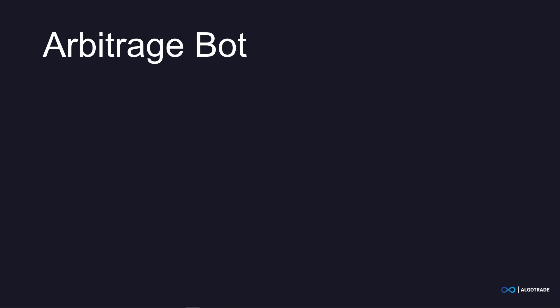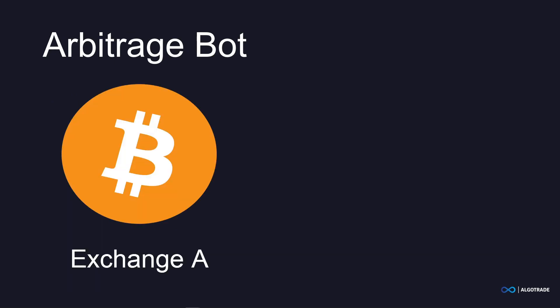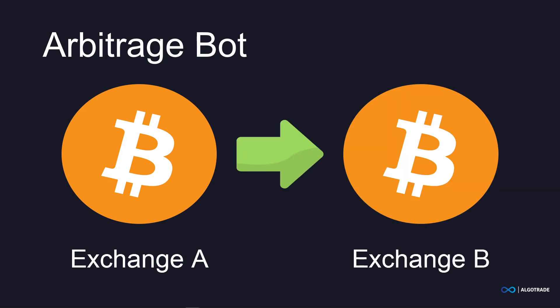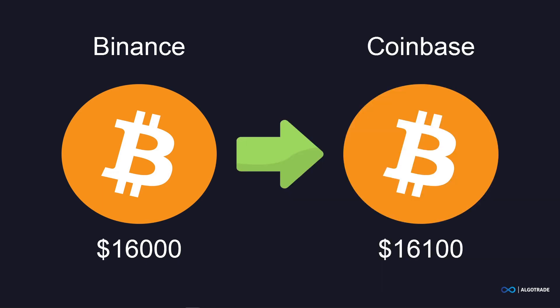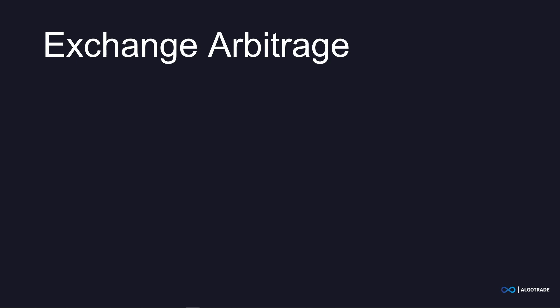One of the most misunderstood crypto trading bots are arbitrage bots. Arbitrage works by buying one cryptocurrency on exchange A and then selling it at a higher price on exchange B. For example, if the current price of Bitcoin against USDT on Binance is $16,000 and on Coinbase is $16,100, you could buy one Bitcoin for $16,000 on Binance and sell it for $16,100 on Coinbase to make $100 in profit. In theory this sounds very simple, but this type of arbitrage is almost impossible to do nowadays.